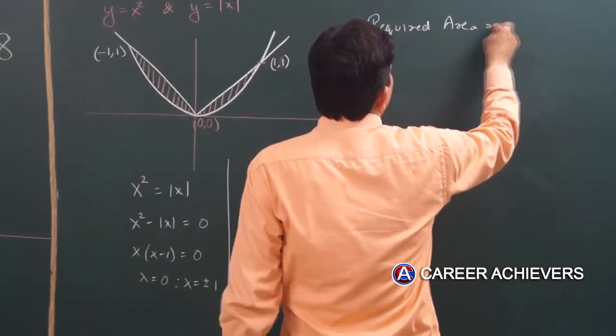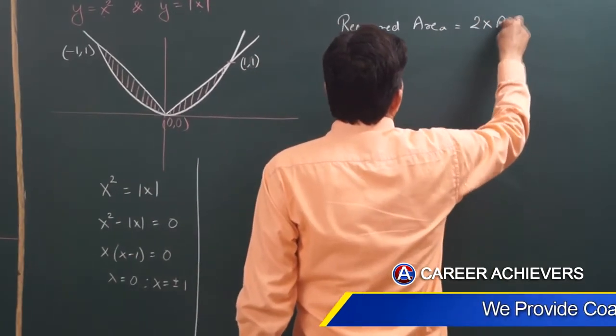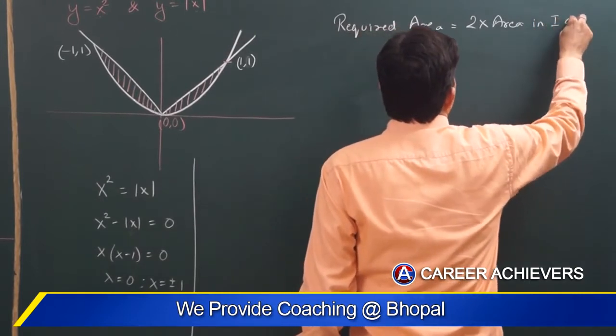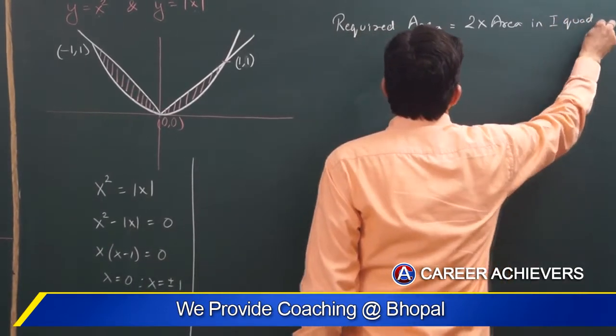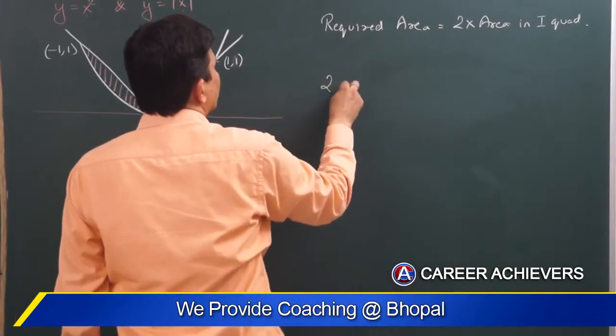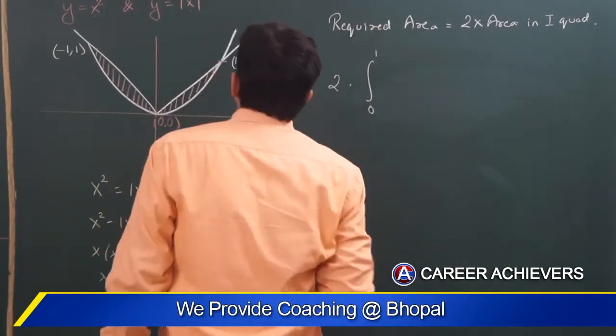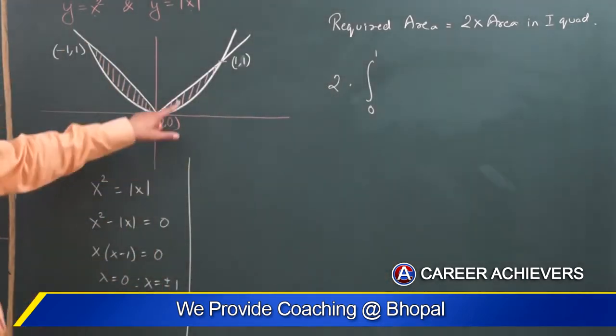Equals to twice into area in first coordinate. Kyunki symmetrical. Twice into area in first coordinate, kahan se kahan tak integrate, zero se one tak pehle kisko.